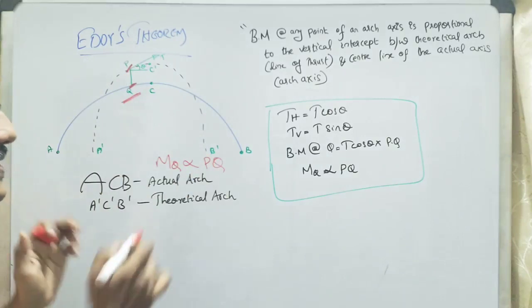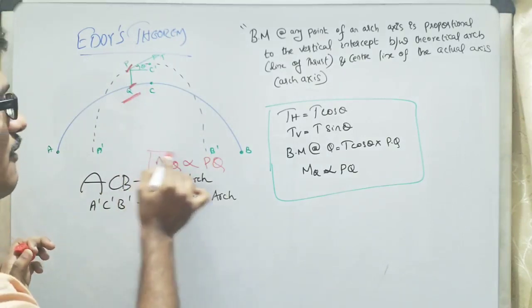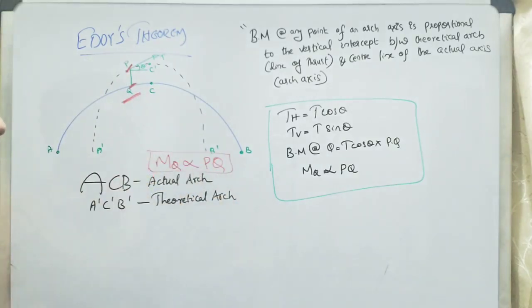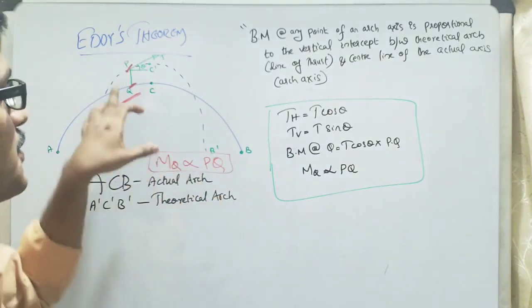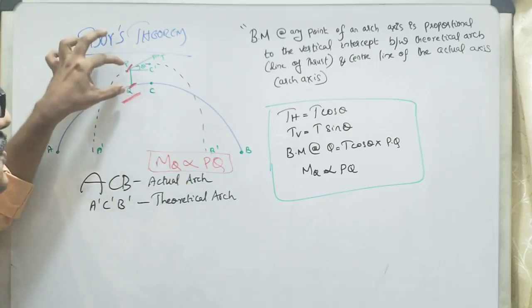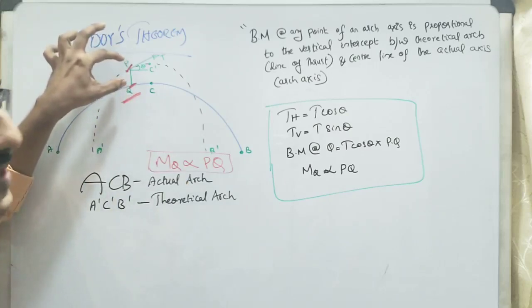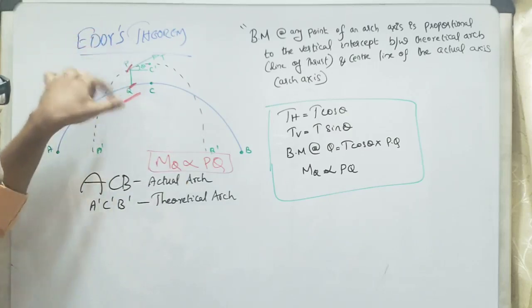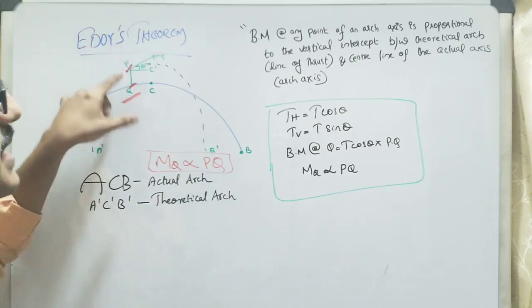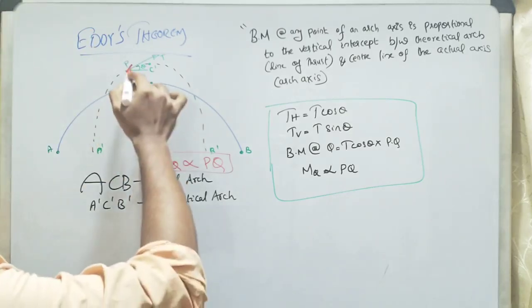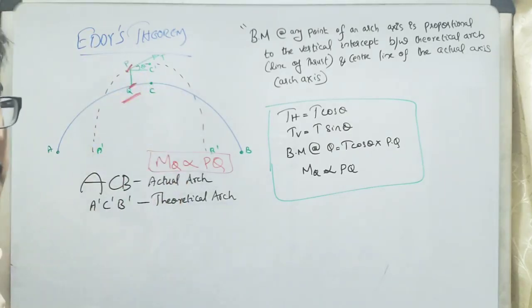This is our main intention to prove: that the bending moment at Q is directly proportional to the vertical intercept between the theoretical arc and the actual arc, that is PQ in this figure.